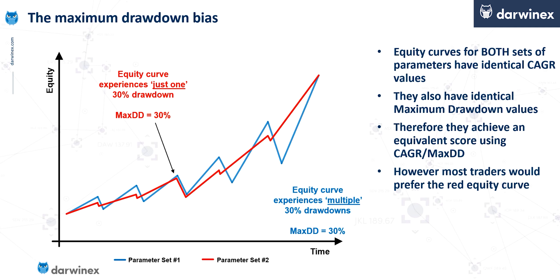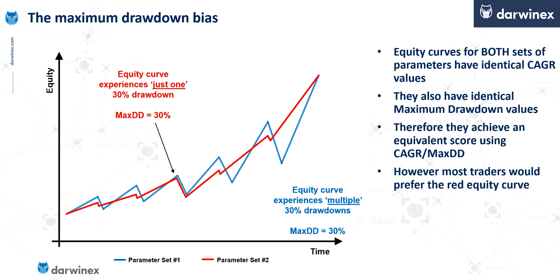However, it's clear to see that the red equity curve is much more preferable to the blue one. Unfortunately, CAGR over max drawdown can't be used to differentiate these two equity curves. This is why CAGR over the mean drawdown, or the average drawdown, can be a much more effective performance metric at differentiating between parameter values in an optimisation.